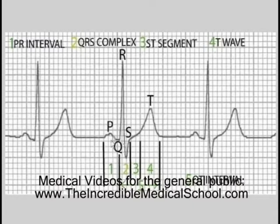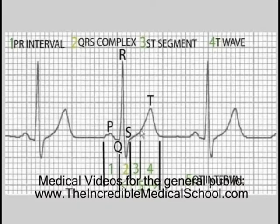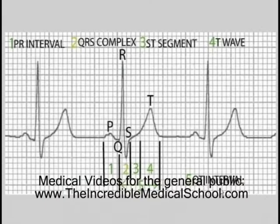The area from the P wave to the QRS complex is referred to as the PR interval. The area from the QRS complex to the T wave is referred to as the ST segment. The distance from the Q wave to the end of the T wave is referred to as the QT interval.